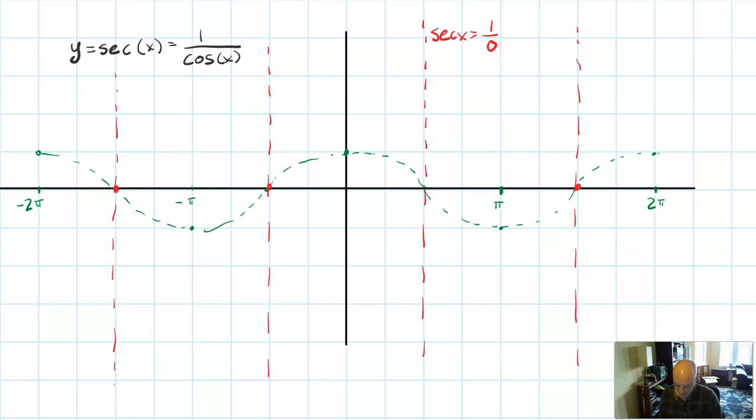Notice that there's not a vertical asymptote at the actual number zero. Where are those asymptotes at? So that would be at half pi, three halves pi, negative half pi, and negative three halves pi.